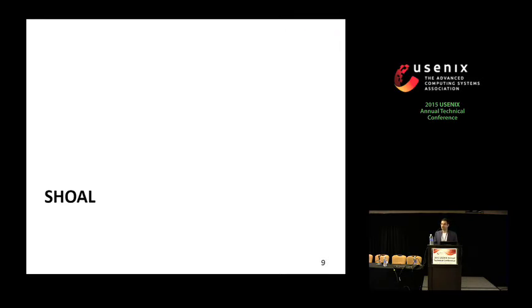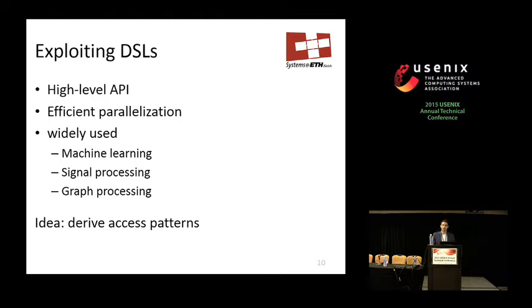What I'm presenting today is Shoal, a framework that tries to do this automatically. We don't want programmers to have to understand machine characteristics or their implications on program performance. The idea is to exploit high-level DSLs — domain-specific languages that provide a high-level programming API, generate highly efficient parallel code, and are used in machine learning, signal processing, and graph processing. Our idea is to derive memory access patterns automatically from these languages.